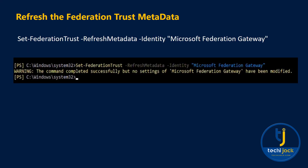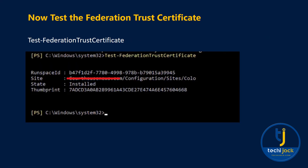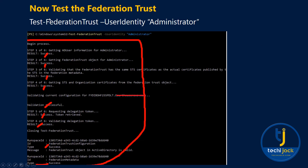Now we can refresh the federation trust metadata. Run the commandlet Set-FederationTrust -RefreshMetadata -Identity 'Microsoft Federation Gateway'. Once done, confirm that the federation certificate is installed by running Test-FederationTrustCertificate. You will see the state shown as 'Installed' along with the new thumbprint — this is a good sign indicating your federation certificate has been successfully installed.